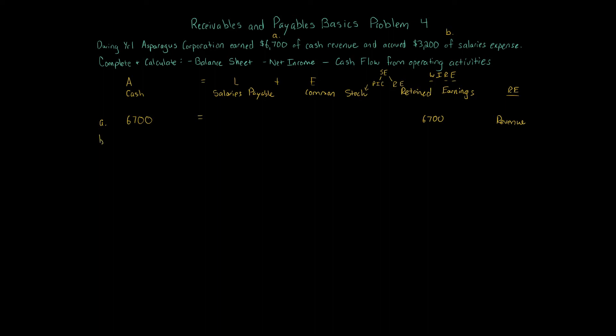That balances the equation. And then transaction B, we've got $3,200 of salaries expense have been accrued. Any effect to cash? No. What about salaries payable? Yes. If you have an accrual, you're going to have either a receivable or a payable. So we're going to increase salaries payable by $3,200. That's an increase. And retained earnings is going to decrease by $3,200 because we have an expense. We're recording an expense of $3,200. Expenses increase, but when expenses increase, guess what decreases? Retained earnings. Those are our two transactions.